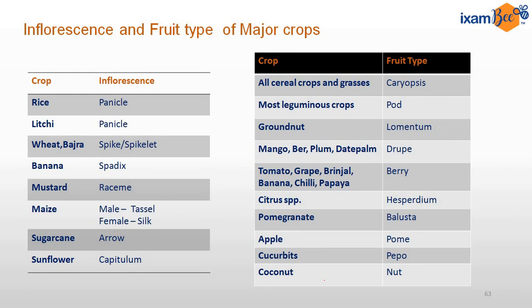Inflorescence and fruit types of major crops: In case of wheat, the inflorescence is known as a spike or spikelet. In case of rice it is a panicle. For banana it is a spadix. The female inflorescence of maize is known as silk, and the male inflorescence is known as tassel. For sugarcane it is called an arrow.